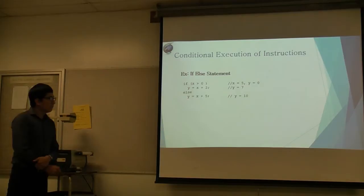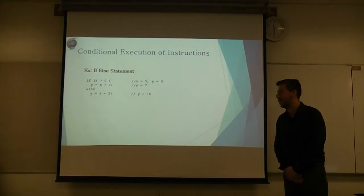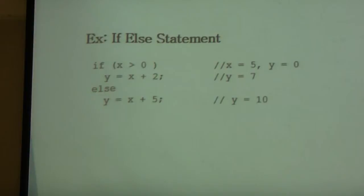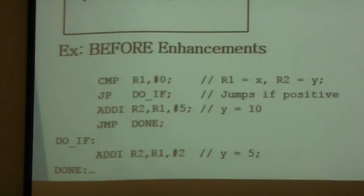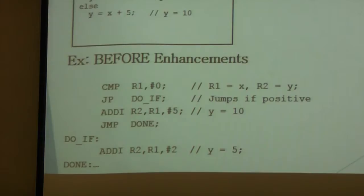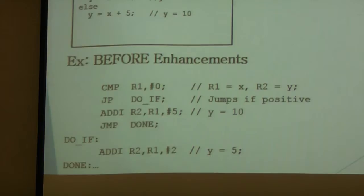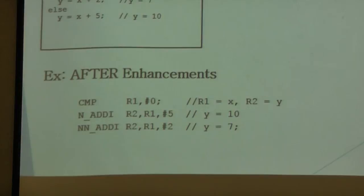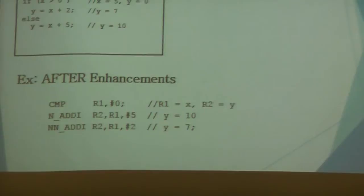Here we show an example of how we could implement such a conditional execution of instructions. We all use if-else statements when writing code, so we wanted to show a simple if-else statement. Right here we have if x is greater than zero, y equals x plus 2, else y equals x plus 5. Before enhancements, this is the amount of code you would need to implement. You would have to have a compare, a jump if positive, an add immediate, and a jump done. In the case that was zero, you would jump to your if condition, add immediate, and then you're done. With our preconditions, you could reduce code space by just implementing two lines of code after the compare. You do the compare, the negative add immediate, or not negative add immediate.